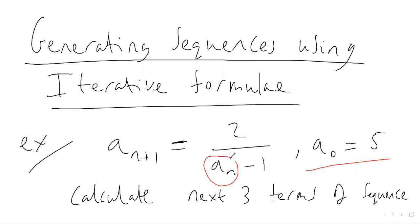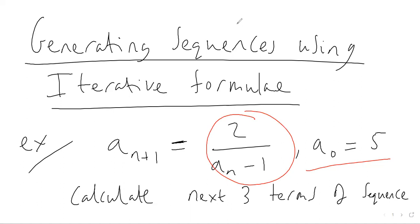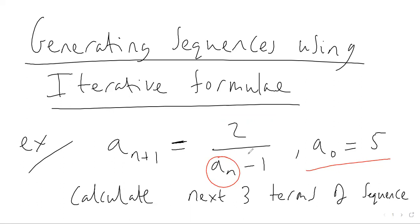When we plug a number into the formula — for example five — we get two divided by five take away one, which is two divided by four, which is a half. So we've generated the next number in the sequence. To get the number after that, we substitute the result: plugging in a half gives two divided by a half take away one, and a half take away one is negative a half, so two divided by negative a half gives negative four.